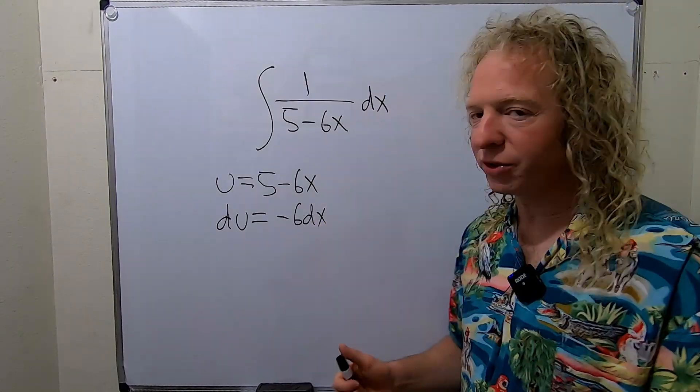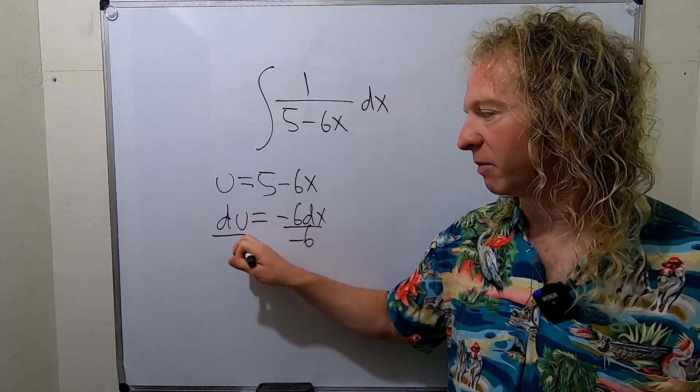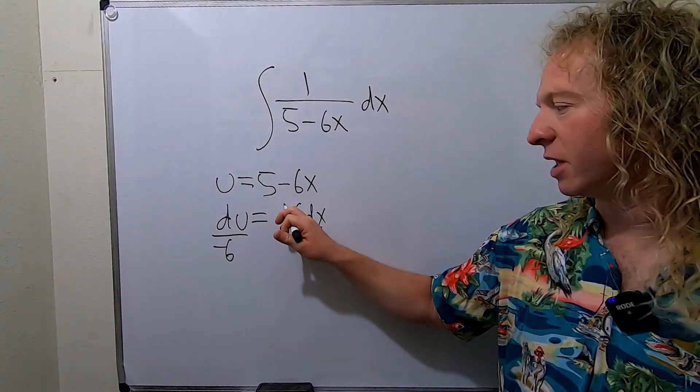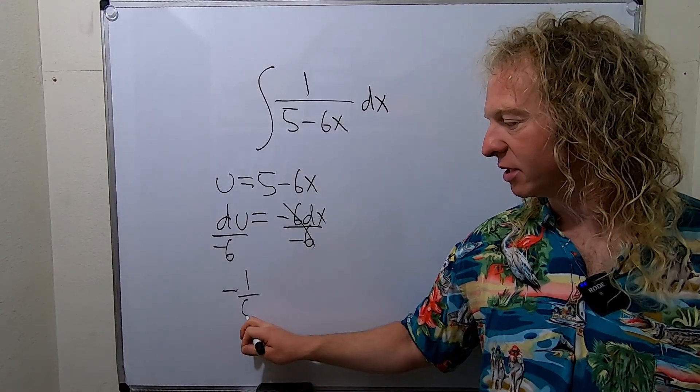So to get rid of it we'll divide both sides by negative 6. So dividing by negative 6, these cancel. We can write this as negative 1 sixth du.